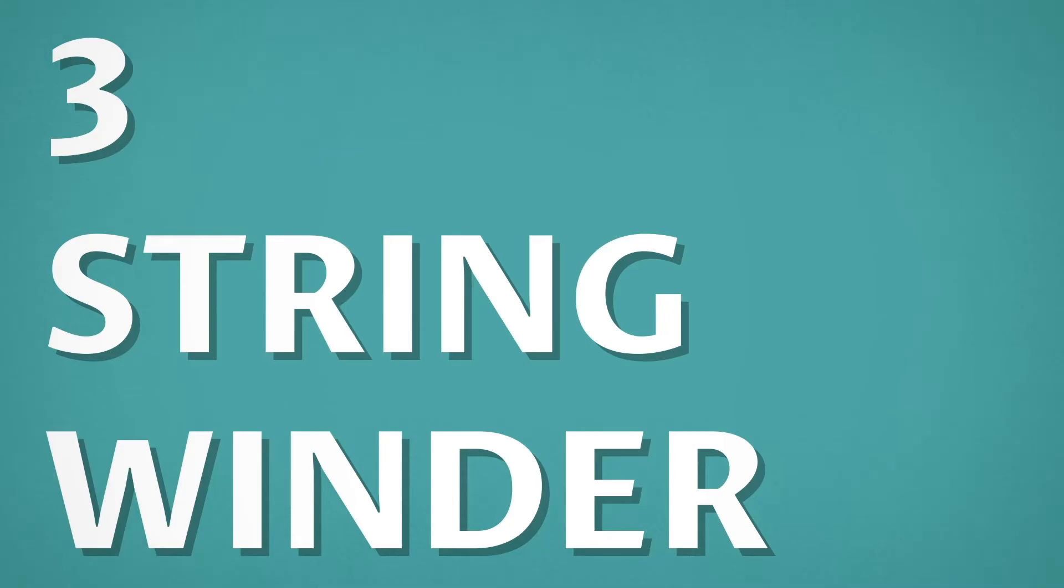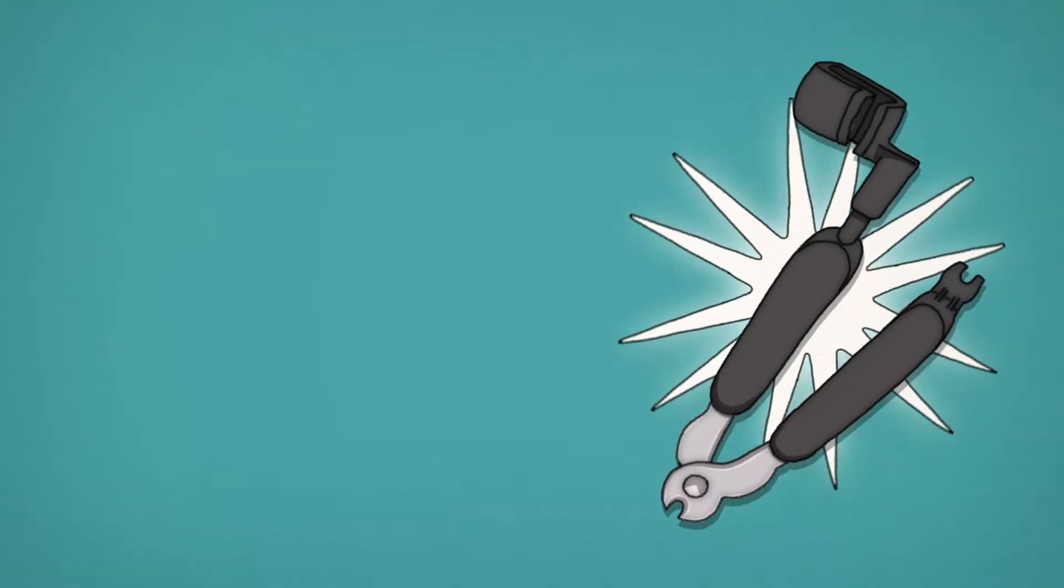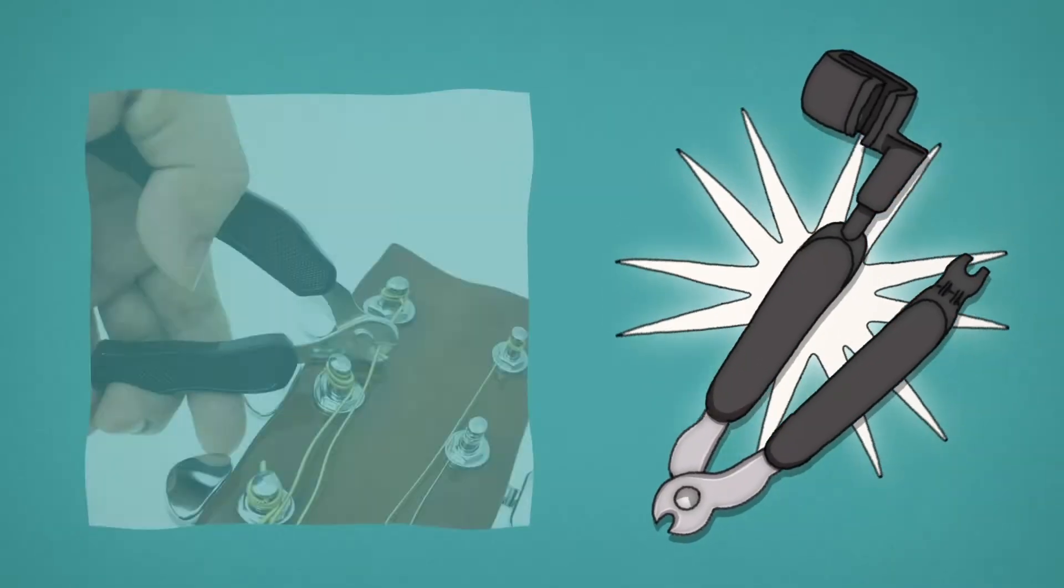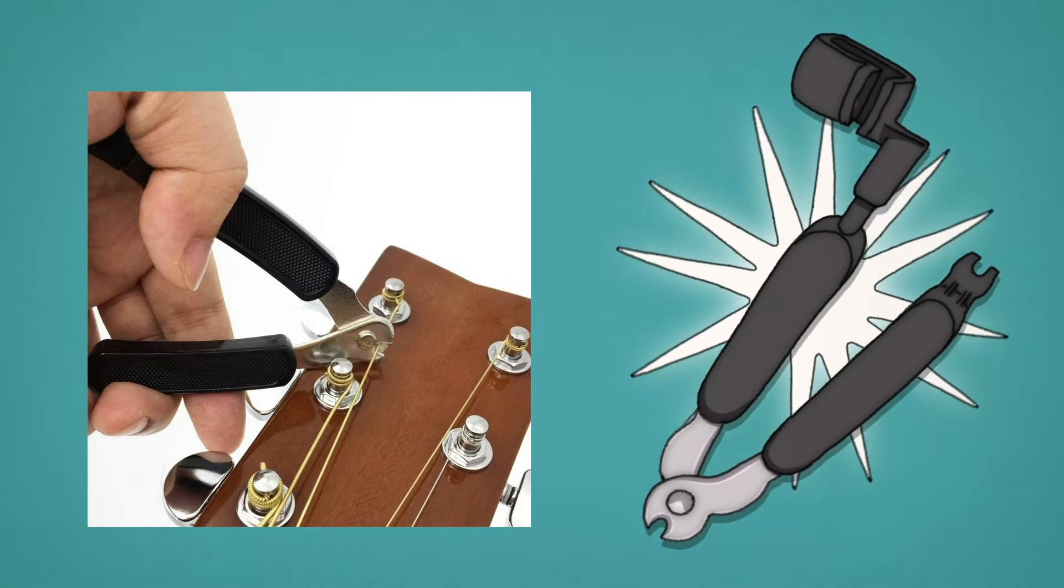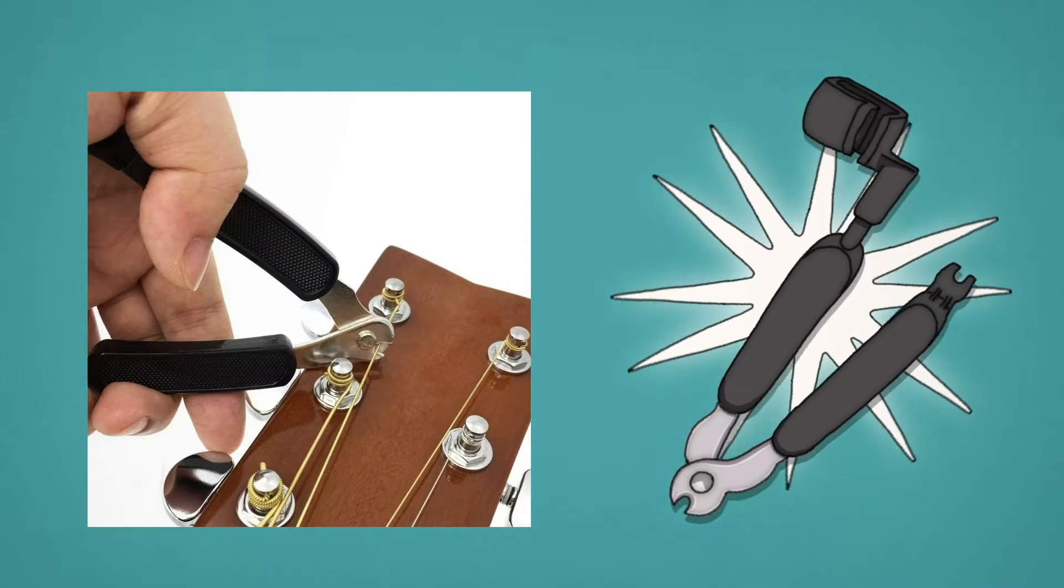Number 3: String winder. While we're on the subject of changing strings quickly, we recommend the string winder. Many also have a pair of wire cutters built into the handle so you can cut the string to the length you want, thread the string through the guitar tuning head, and then use the winder to tighten the string in a matter of seconds.